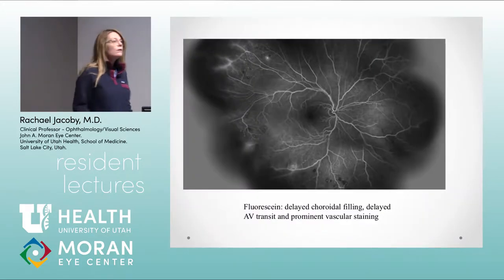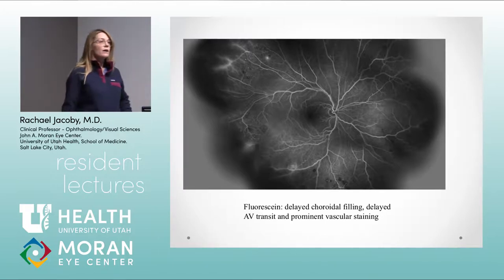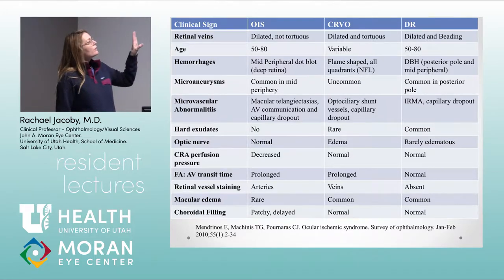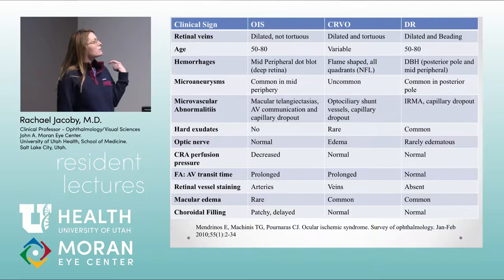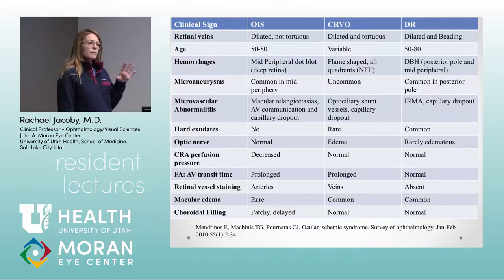You can also get capillary dropout and micro aneurysms as well. This comparison chart contrasts the different clinical findings between ocular ischemic syndrome, vein occlusions, and diabetic retinopathy. In severe ischemic CRVO you won't mix that up with ocular ischemic syndrome, but it's the mild non-ischemic cases where it can be unclear.